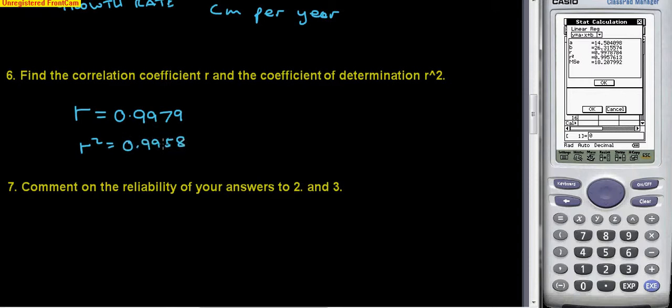Both very good numbers because they're both very close to one, so it means the model is a pretty good one. Now part seven: comment on the reliability of your answers to question two and question three.